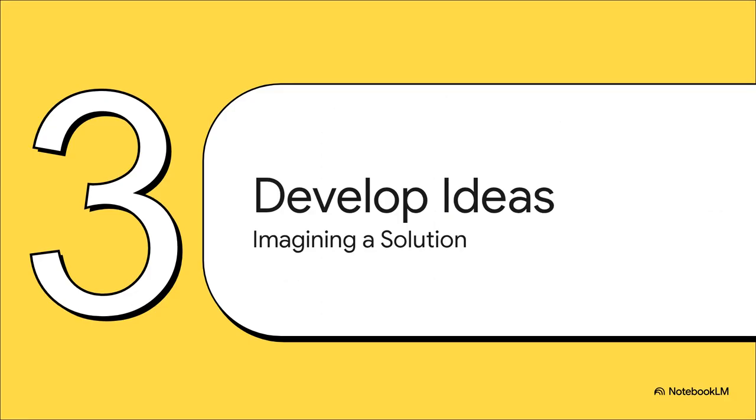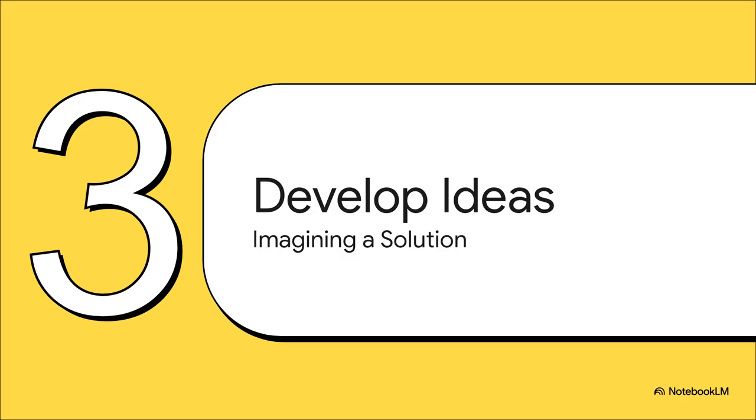Okay, so with all that solid research in their back pocket, the student could finally move into the fun, creative phase: developing ideas. This is criterion B, where all that investigation gets turned into actual concrete designs for a solution. But before they started drawing, they made a design specification. This is basically their rulebook for success. And look how specific these are: a hard budget, the exact materials, and really clear, measurable rules for how it should work and be safe. This list is going to be their guide for every single decision from here on out.